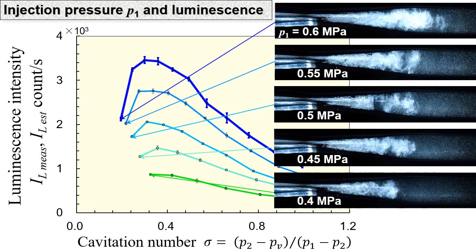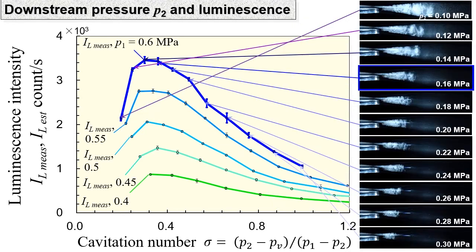Luminescence intensity was increased with injection pressure. When the downstream pressure is increased, the cavitating length became shorter. However, the luminescence intensity is increased and it has a maximum at a certain downstream pressure.